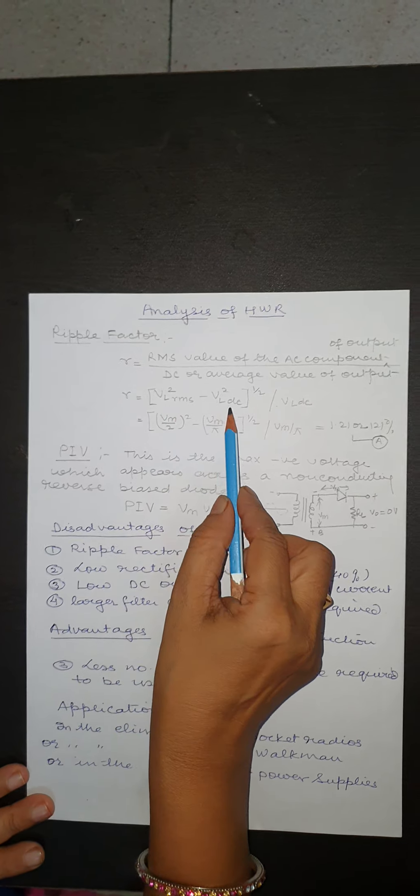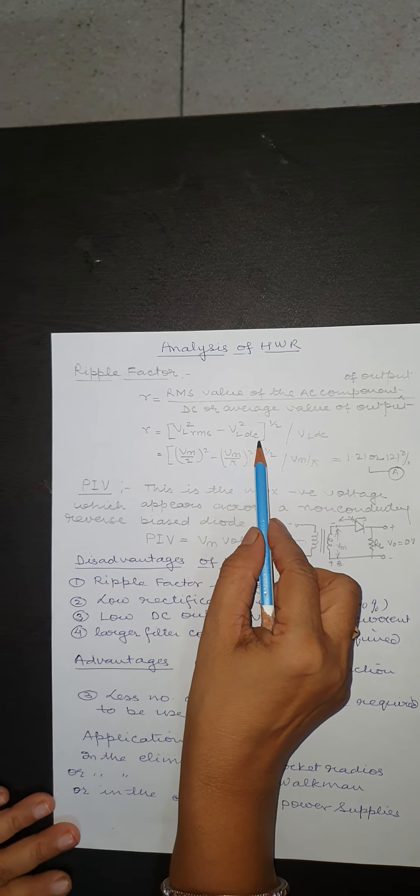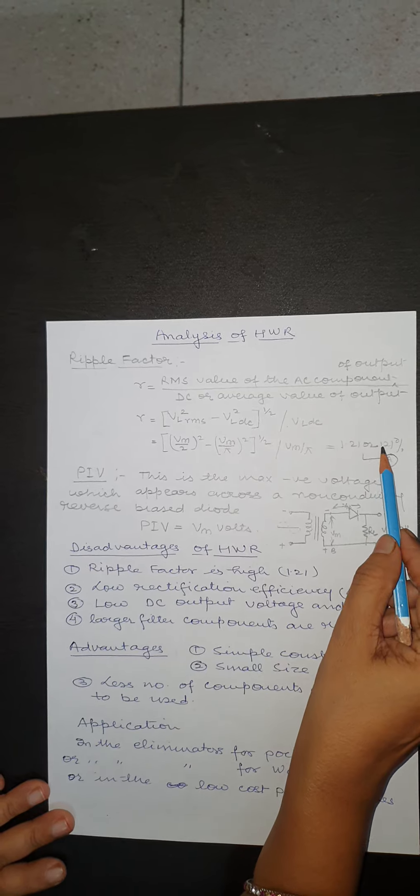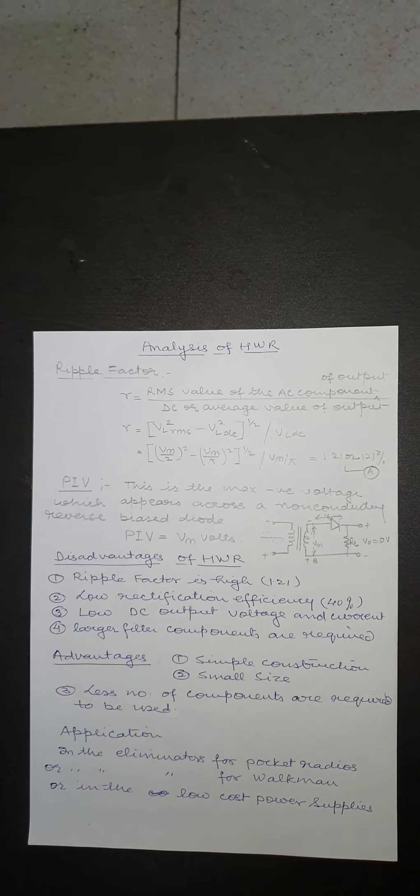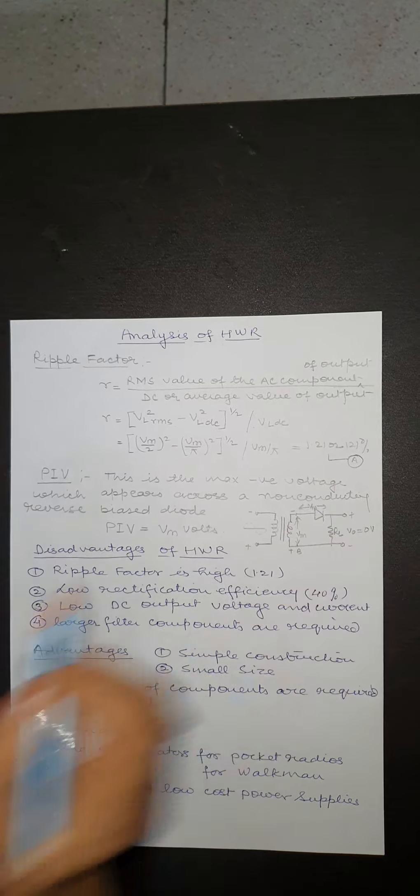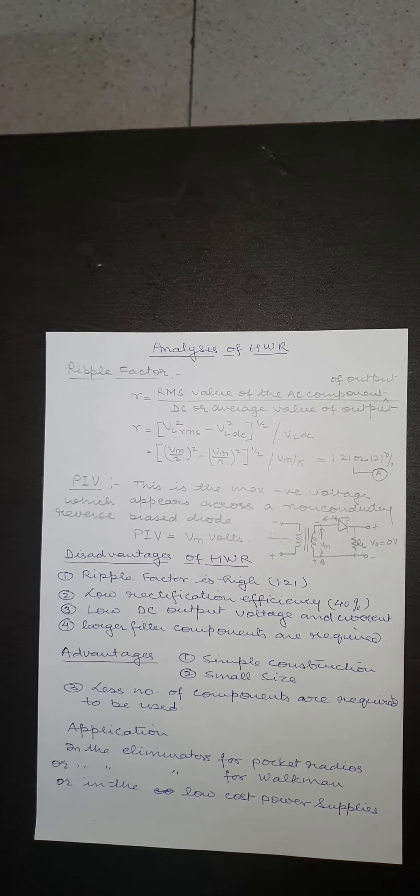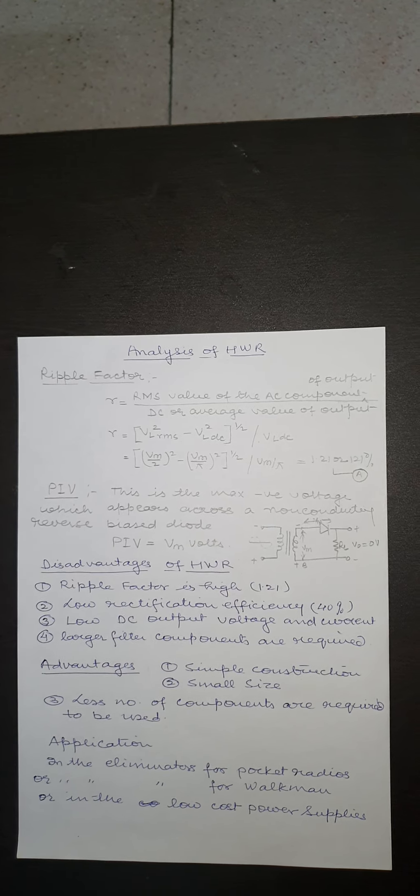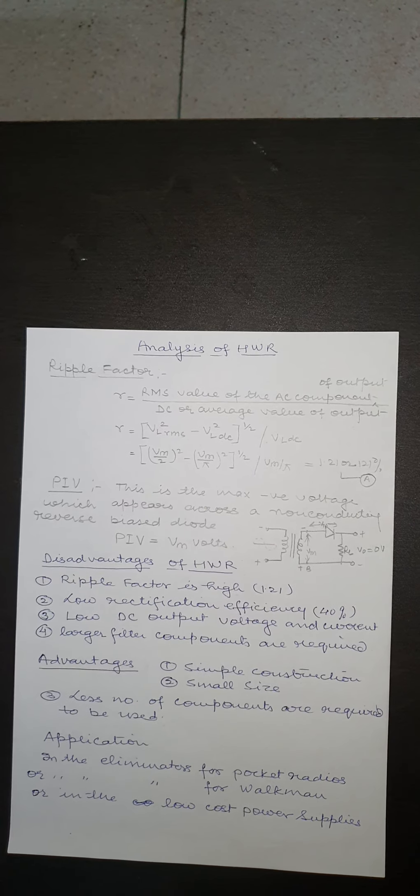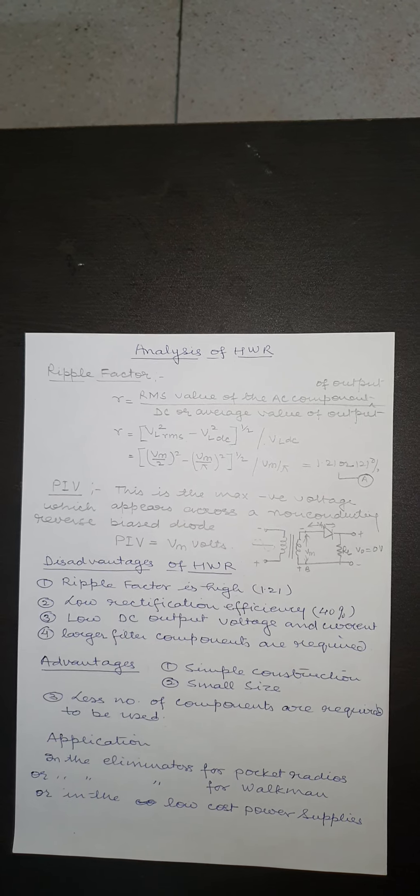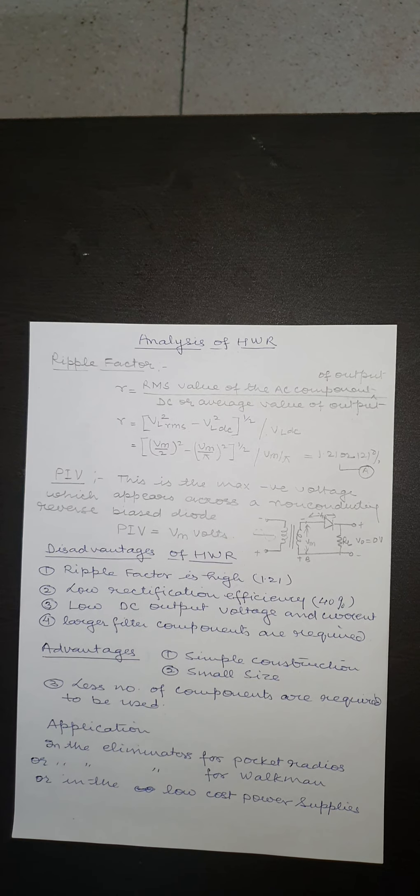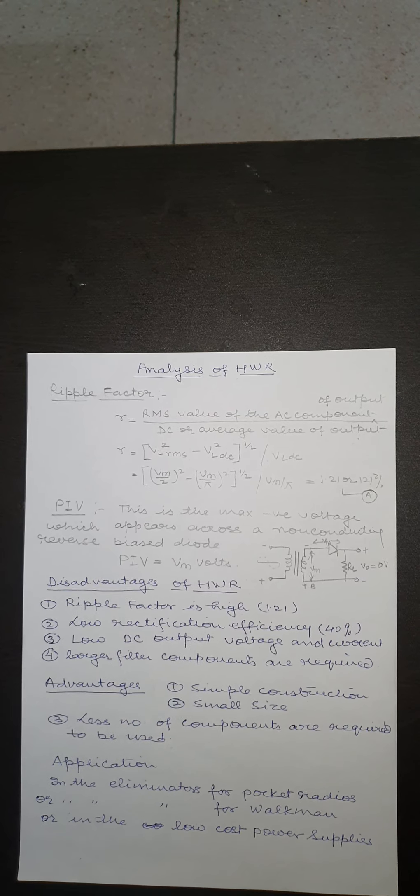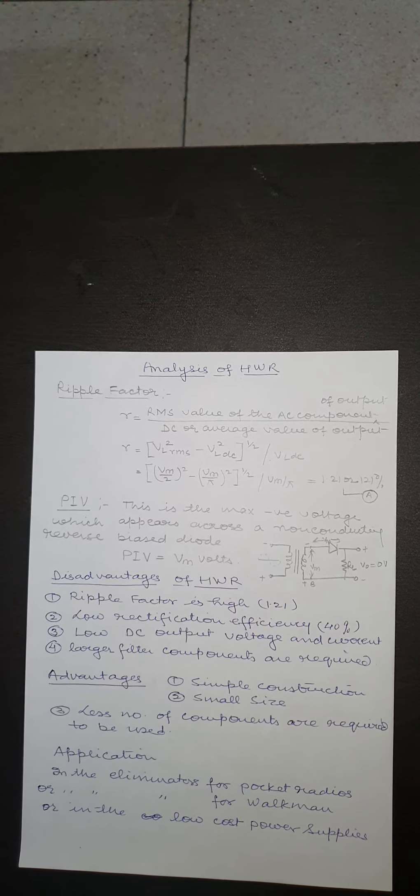Substituting the value of VL,RMS and VL,DC, we get the value of ripple factor is 1.21 or 121%. This equation indicates that the ripple content in the output is 1.21 times the DC component, and this is a very high value of ripple factor which indicates that the output of half-wave rectifier is no way close to the pure DC voltage. A filter circuit is required to reduce ripple factor.